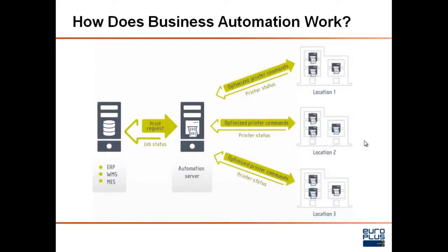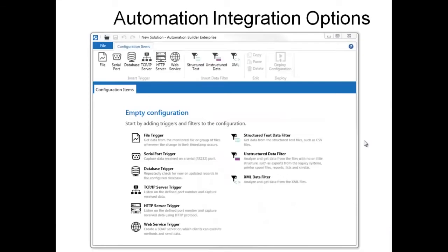For the print job, your user is going to be interacting inside the SAP application. They're going to select their label, select their data, select their printer location, and then the job is going to get queued up and sent down to the automation server. Our automation product is going to be on a server somewhere in your environment, which has access to all of your different printer locations. As the job is sent down from SAP, the user doesn't even know the NiceLabel product is there — we're just processing the jobs behind the scenes as a service and routing them to location one, two, or three. It's a very clean method of printing, which gives you full flexibility to drive any printer.